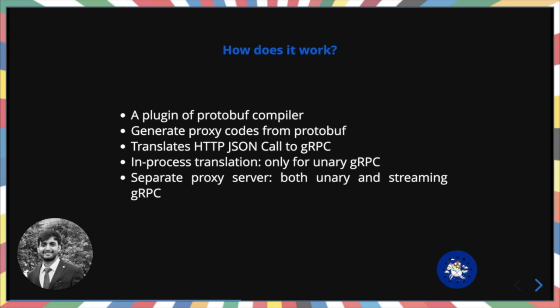Since gRPC-gateway is a plugin of the protobuf compiler, it generates proxy code from protobuf — generating HTTP and gRPC code at the same time. There are two types of translation we can use to implement the gateway. In-process translation means the gateway can call the gRPC handler directly in code without an extra network hop.